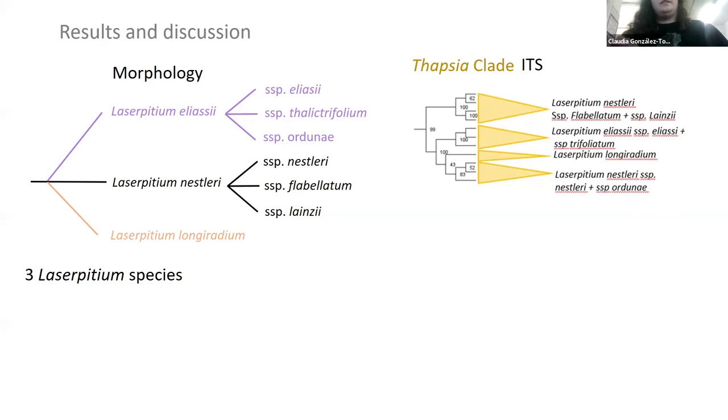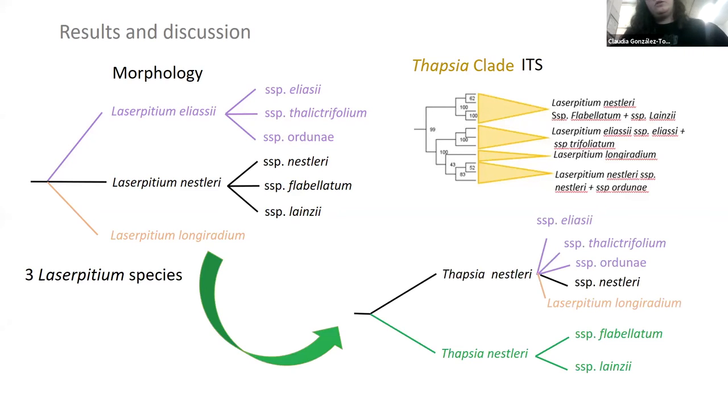With our ITS data and looking at the Thapsia clade, we believe that this should look more like this. We have two Thapsia eliasii clades, one which would include the type of the species, all the species of Laserpitium elaeosalinum, and Laserpitium longiradium.